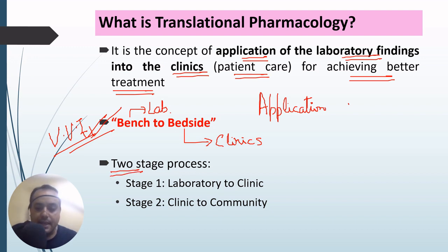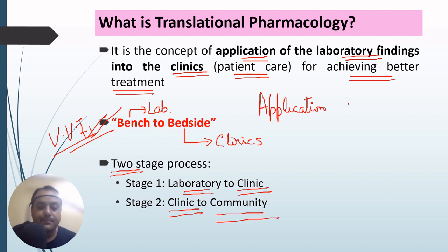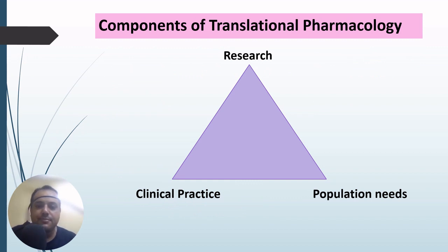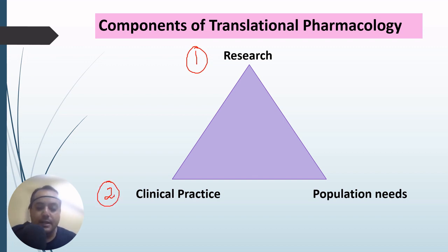Translational pharmacology is a two-stage process. In the first stage, laboratory findings are ultimately applied into the clinic. In the second stage, we want to achieve a better treatment outcome, so the second stage focuses on applying what we have learned in the clinic to the community. Translational pharmacology has three major components: basic laboratory research, clinical practice, and population needs.